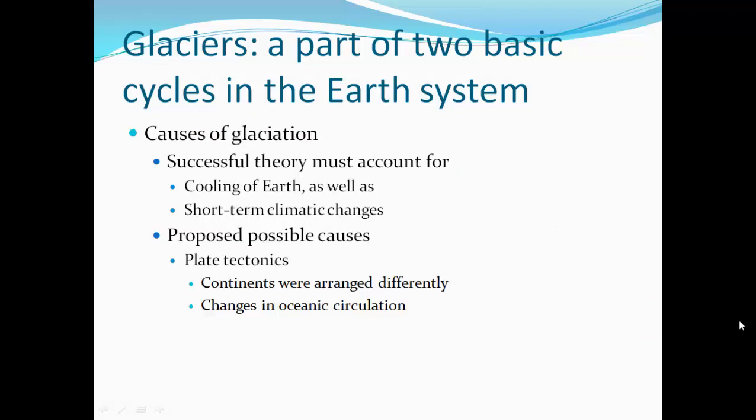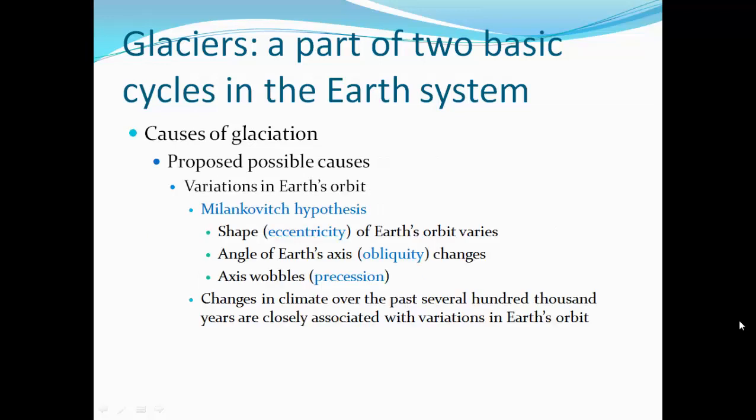Causes of glaciation: successful theories must account for cooling of the Earth as well as short-term climate changes. Proposed possible causes include plate tectonics — continents were arranged differently — and changes in ocean circulation. Other possible causes include variations in Earth's orbit. The Milankovitch hypothesis considers the shape or eccentricity of Earth's orbit — it's not a perfect circle, it's an oval — the angle of Earth's axis, its obliquity changes, and the axis tends to wobble or precess. Changes in climate over the past several hundred thousand years are closely associated with variations in Earth's orbit.